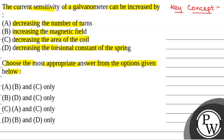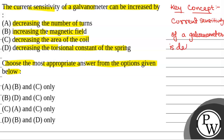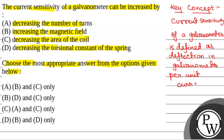The key concept is: current sensitivity of a galvanometer is defined as the deflection produced in the galvanometer per unit current passing through it.